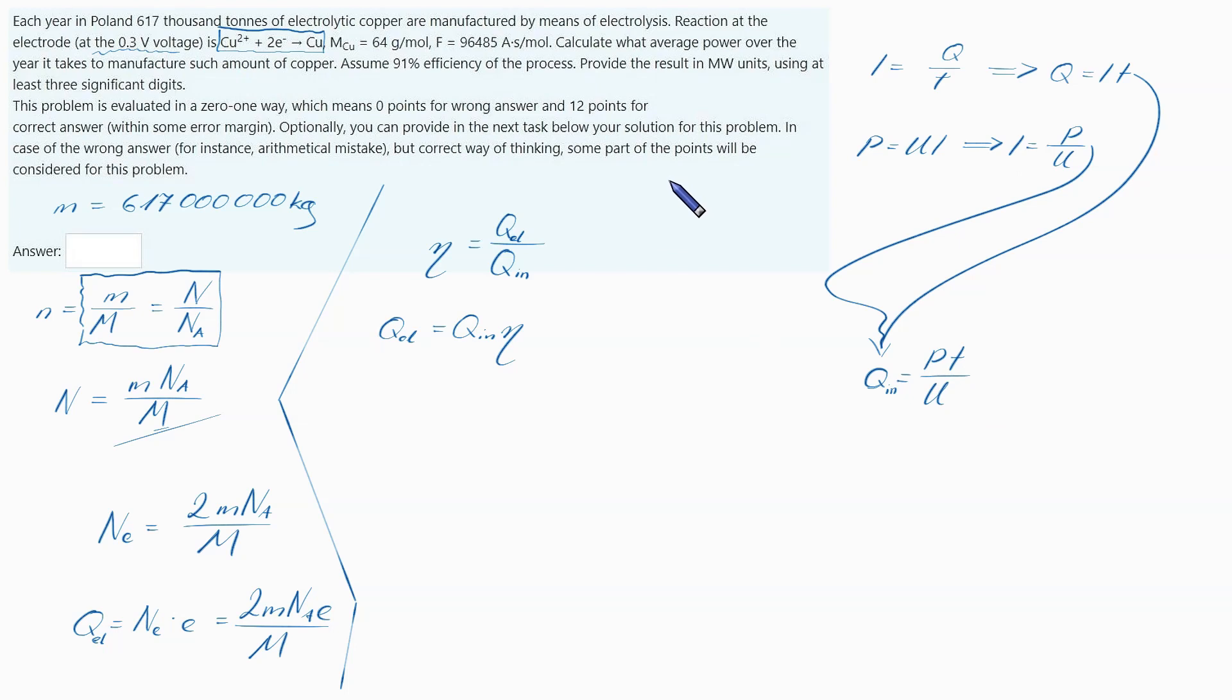Now I shall combine this with that and that. Q_L equals 2M Avogadro number, elementary charge, mass of 1 mol of copper, equals Q_in, which equals P T over U times eta.